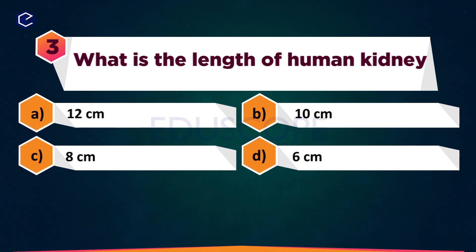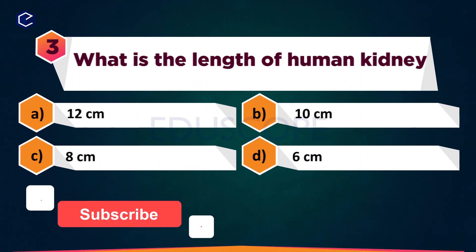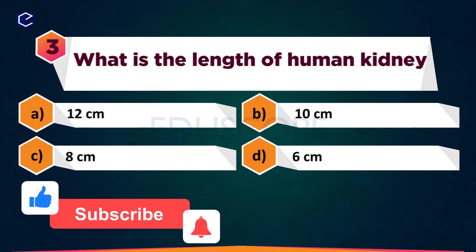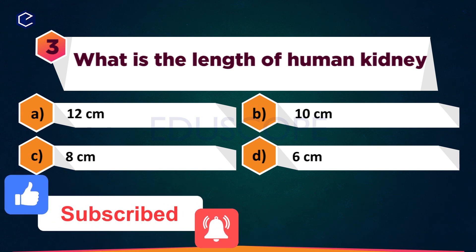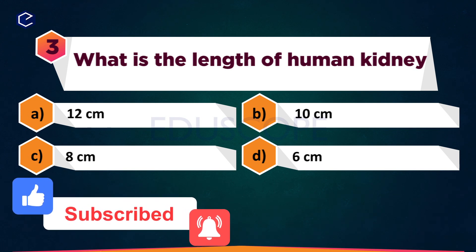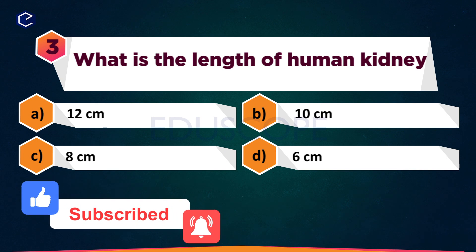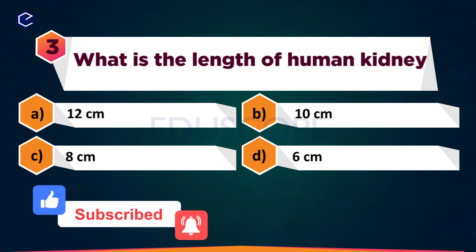What is the length of the human kidney? A: 12 cm, B: 10 cm, C: 8 cm, D: 6 cm.